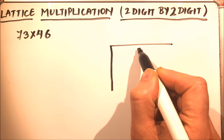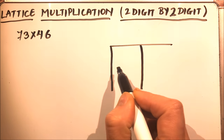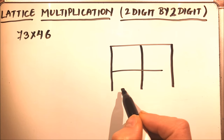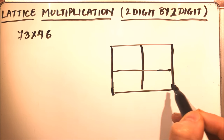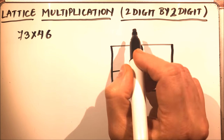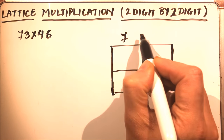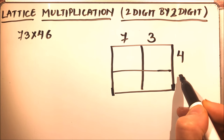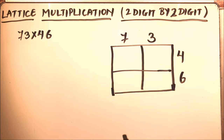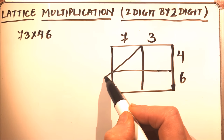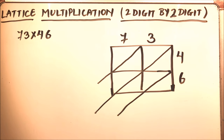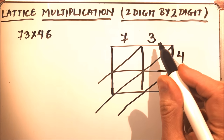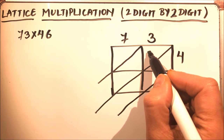Since this is a two-digit by two-digit problem, we will make a rectangle with two columns and two rows — four boxes like this. Then we write 73 on top and 46 on the side, and make the diagonal partitions. Now we will start multiplying: four times three is twelve, so we'll write one and two.